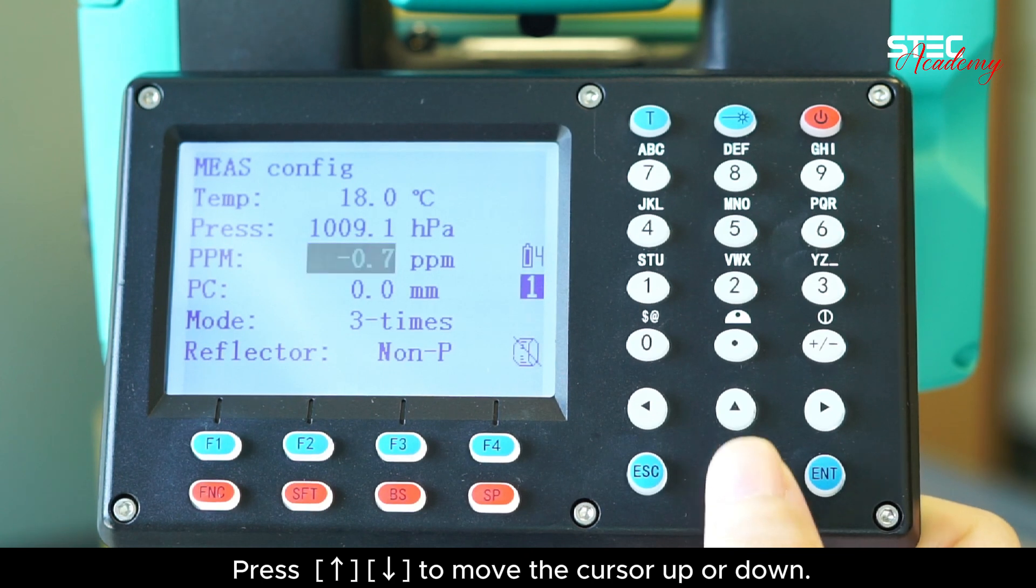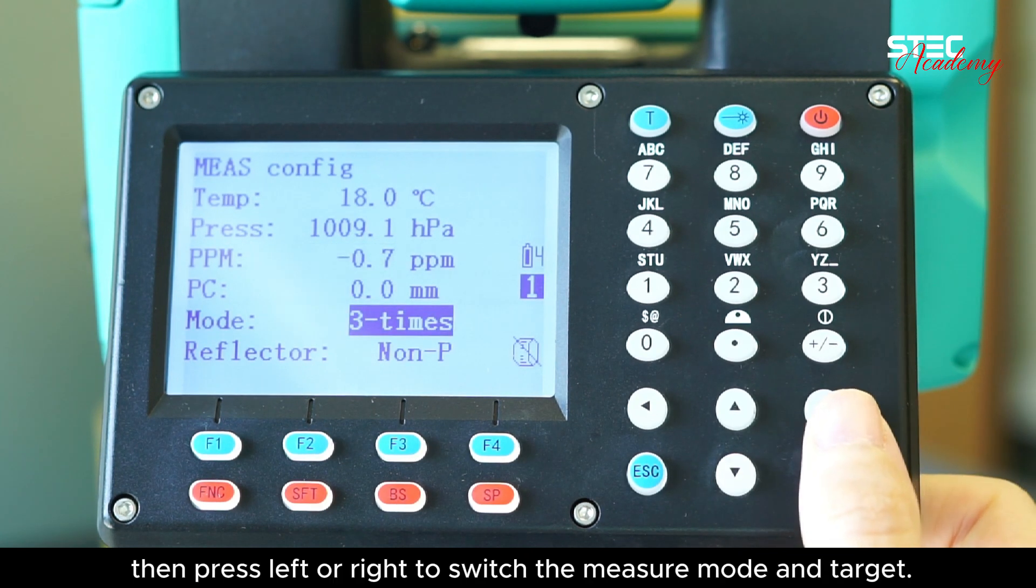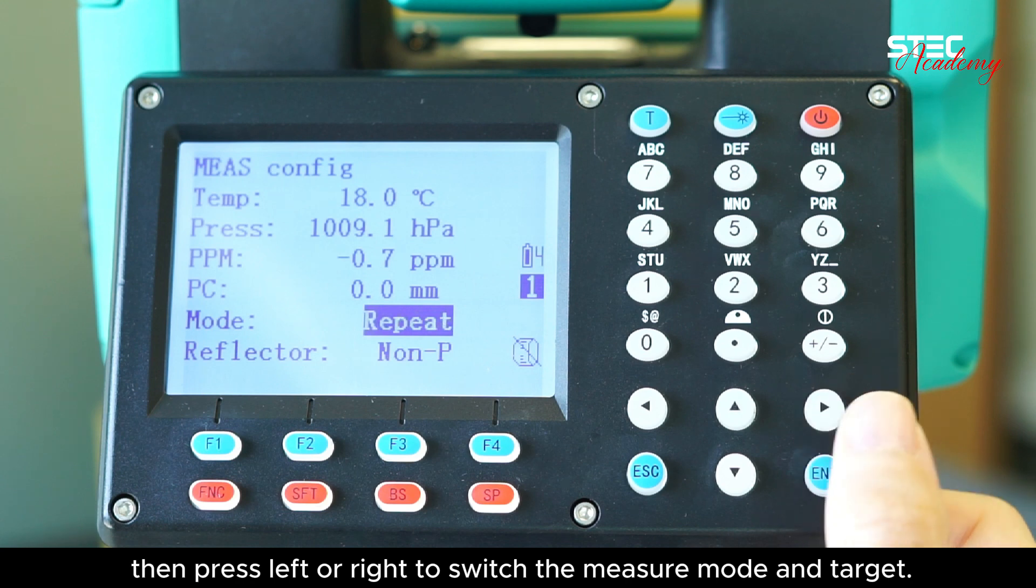Press the navigation key to move the cursor up or down, then press left or right to switch the measure mode and target.